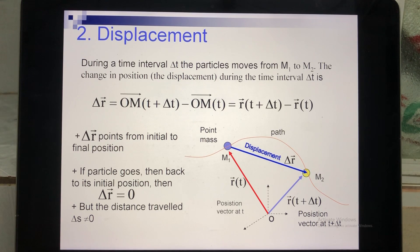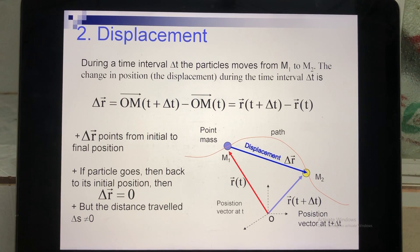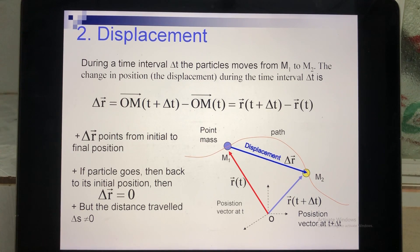So in that one example, you get different answers for different quantities. For displacement, you have zero. For the distance traveled, you have 15 kilometers.